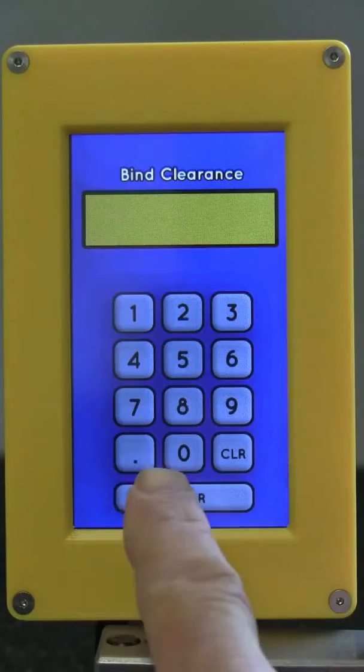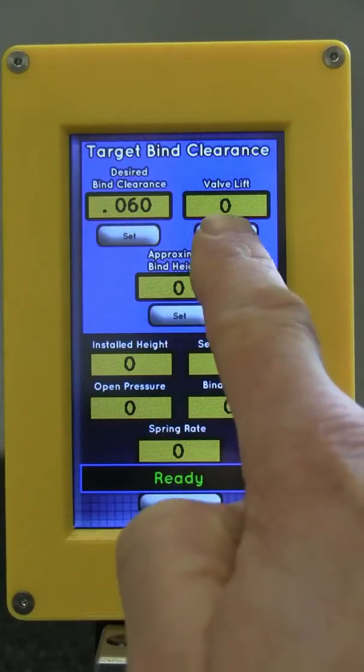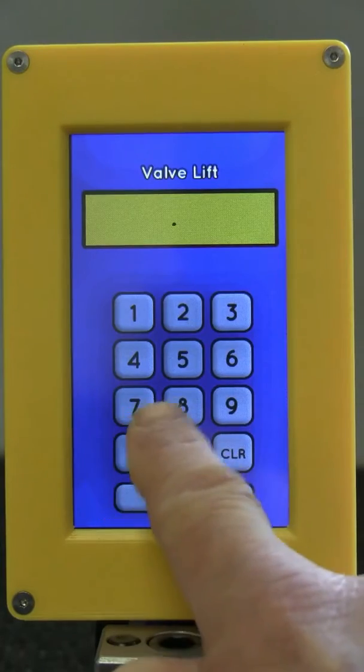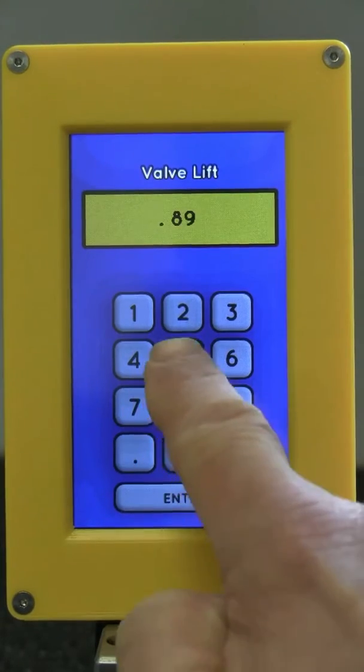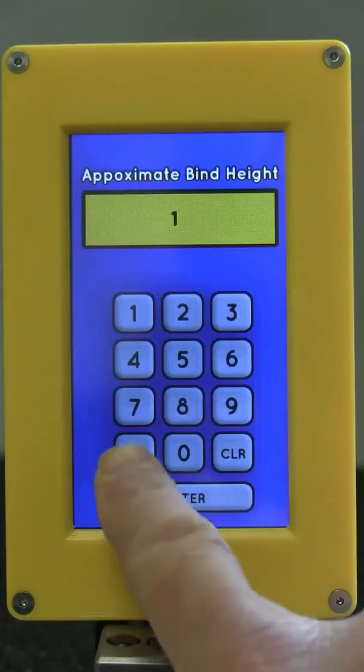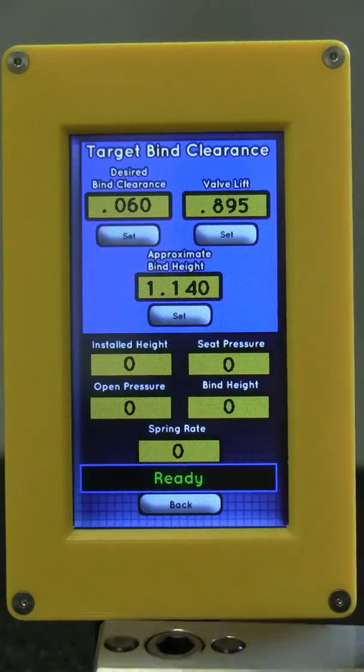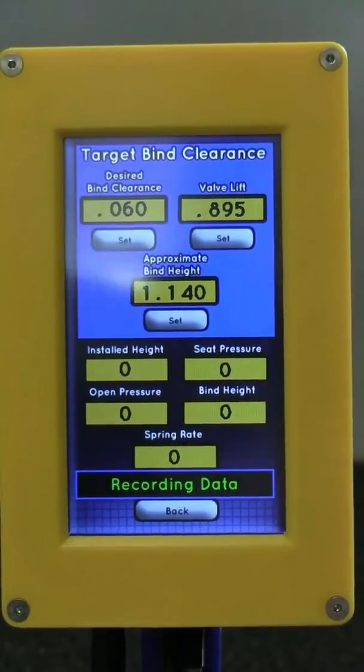And finally in the target bind clearance screen, you enter your desired bind clearance, then enter your valve lift and an approximate bind height. After making a pull it will give you the installed height to achieve your desired bind clearance. It will also give you the seat pressure, open pressure, bind height, and valve spring rate.